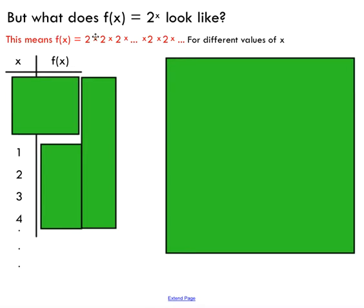What this means is we are going to take this base of two and we're going to multiply it by itself some number of times. How many times? X times. So we're going to do this for different values of x.